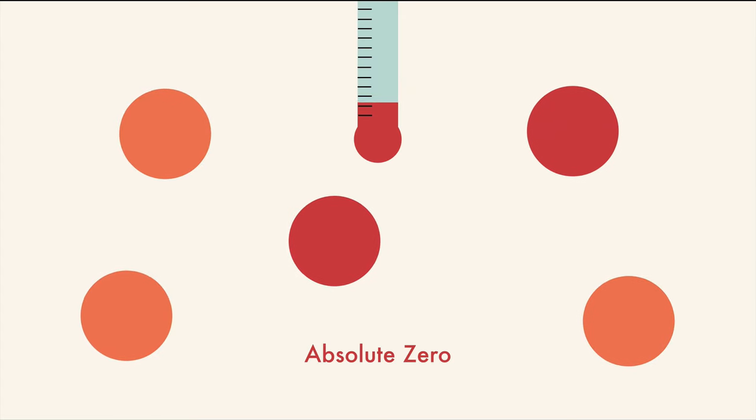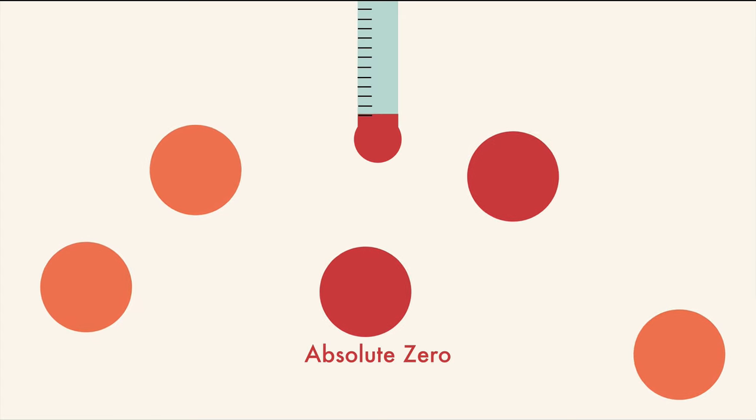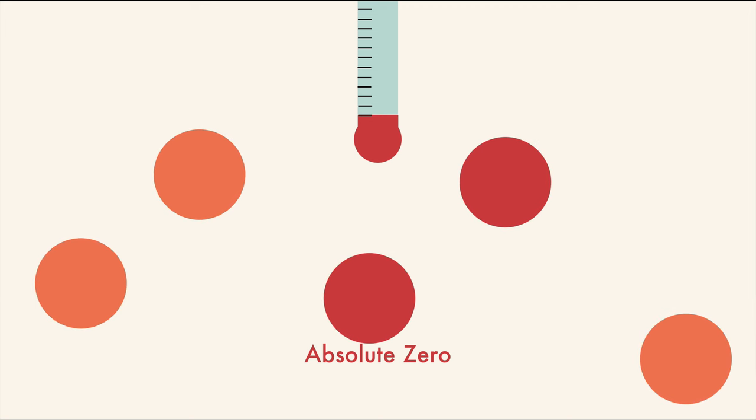If the temperature drops to absolute zero, the kinetic energy of the particles comes to a halt. This is where the Kelvin scale starts, which means that there are no negative numbers in Kelvin. It begins at zero, making it better than Celsius.